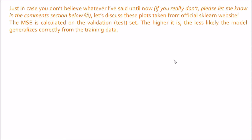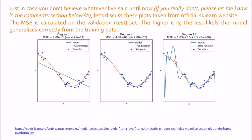In case you don't believe what I've said, let us discuss these plots from the official scikit-learn website. This orange curve is a partial cosine curve, and these are the training samples. I have drawn three particular lines to try to map this data. First, I am drawing this straight line, which is a degree-1 polynomial where y equals mx.